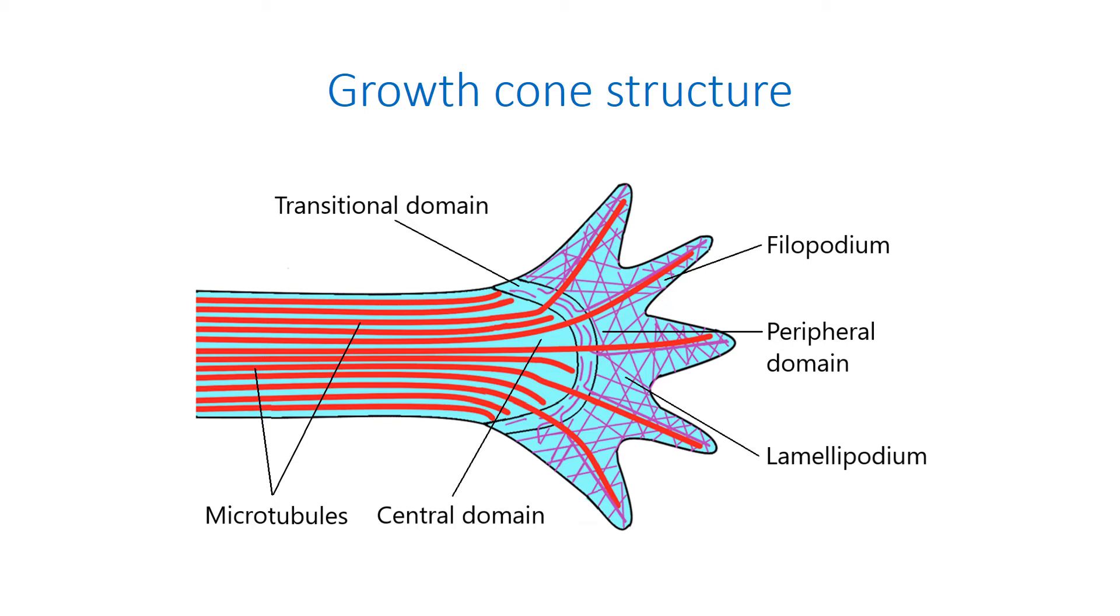The growth cone consists of three domains – the central, the transitional, and the peripheral ones. The central domain is located in the center of the growth cone that is nearest to the axon shaft. This region is composed primarily of microtubules and also contains organelles, mitochondria, endoplasmic reticulum, ribosomes, and vesicles of various sizes. Some microtubules, called pioneer microtubules, break through to the peripheral domain where they intersect and cross-link with the F-actin bundles.